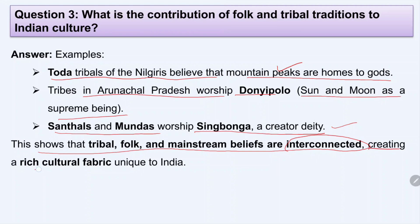These examples show that tribal, folk, and mainstream Hindu beliefs are deeply interconnected. This has taken place naturally over a long period of time, creating a rich cultural fabric unique to India. Because folk tribal and Hindu belief systems share many similar concepts — worshipping deities, worshipping nature like mountains, rivers, trees, plants, and animals — and there is a consciousness believed to be behind all of them.